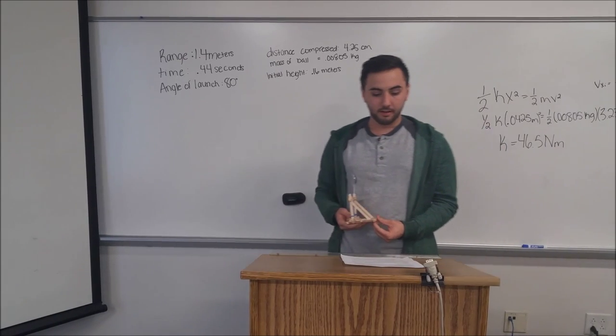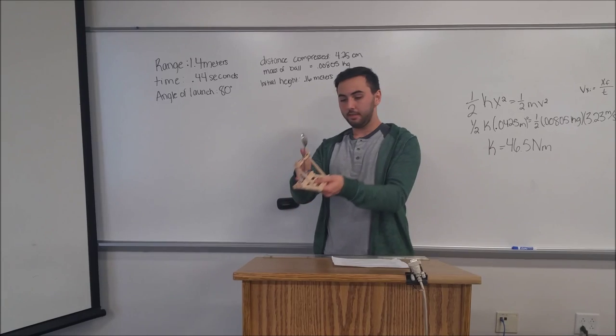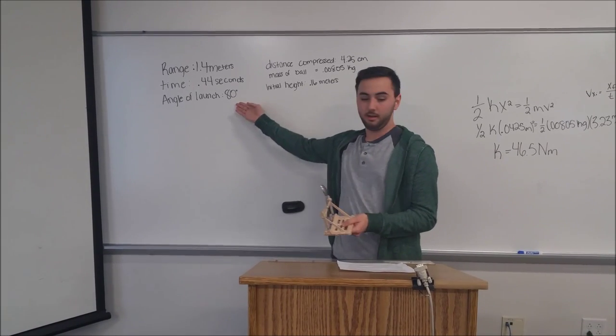After taking a few measurements to find our calculations, we found that by using a protractor, this angle where the spoon is at right now is 80 degrees.